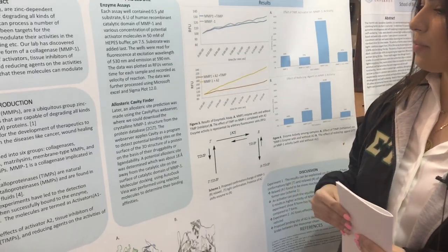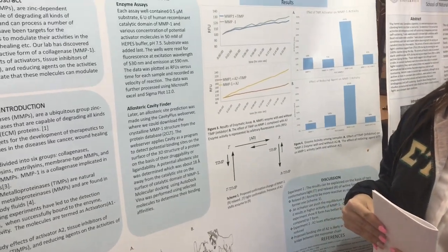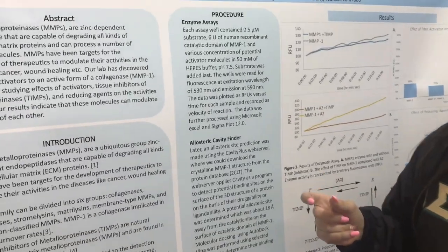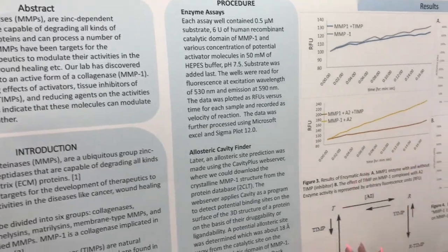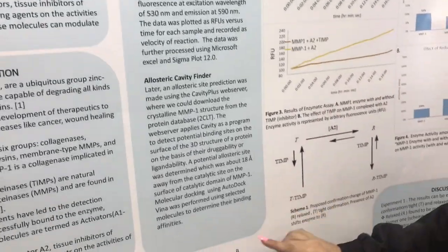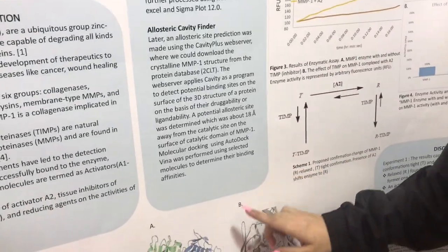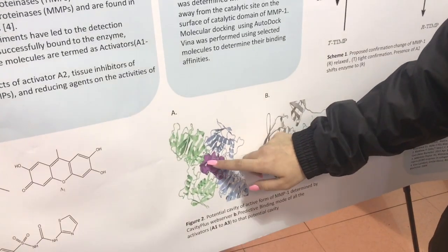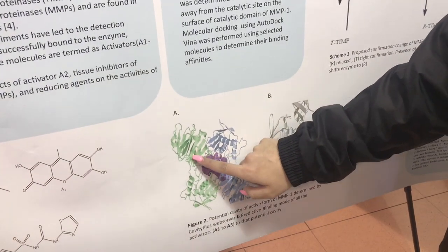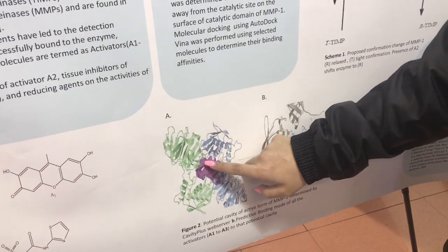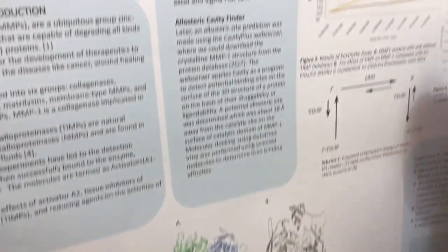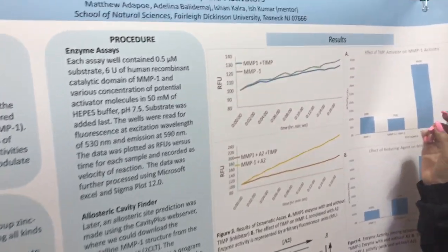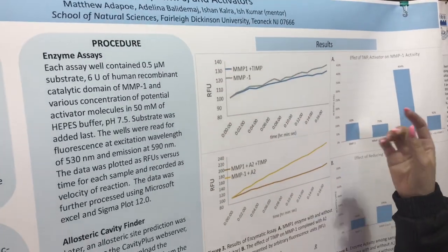The first part of this experiment was to find the activation site on the enzyme, so we did molecular docking. It was shown through molecular docking that there was an activation site in between the green and the blue chain, around that region. Then we added TIMP, which was an inhibitor.